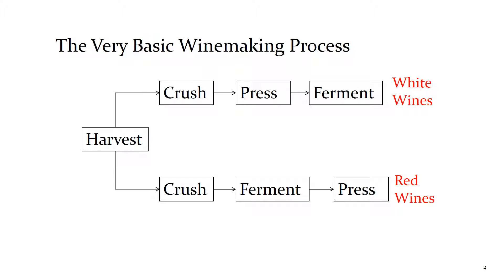Let's look at the very basic winemaking process to start. Whether you're making white wines or red wines, there are four steps in the very basic process. At each step a winemaker has a series of choices. The first step is deciding when to harvest, and that's what we're going to look at today.